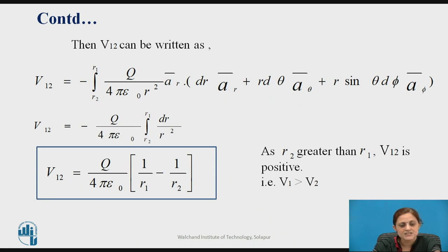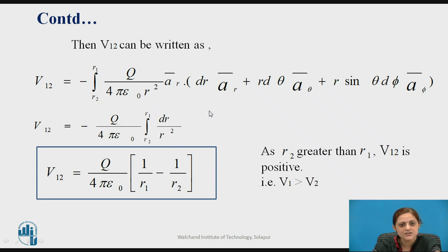Now, V1,2 can be written as the product E-bar dot dl-bar. Here, E-bar is Q upon 4πε₀R² A-bar-R and the differential length is defined in the spherical coordinate system. Since the unit vectors with the same coordinate satisfy A-bar dot A-bar equal to unity, the integration reduces to only with respect to dR. Solving this integration gives the equation V1,2 equal to Q upon 4πε₀ in bracket 1 upon R1 minus 1 upon R2. Since R2 is greater than R1, putting these values into the equation shows that V1,2 is positive.